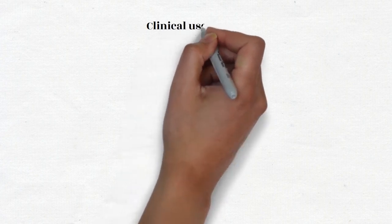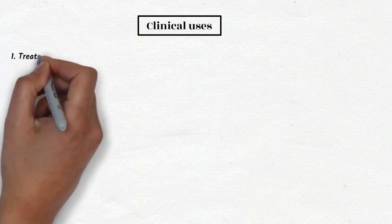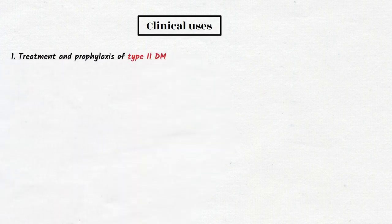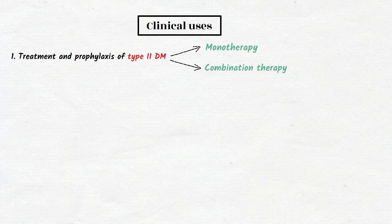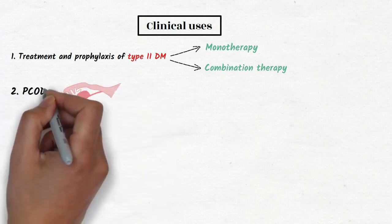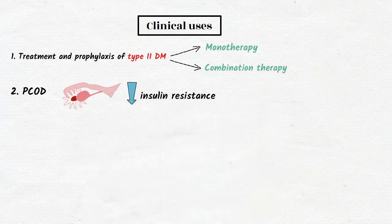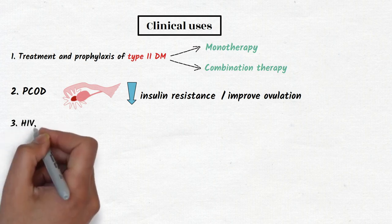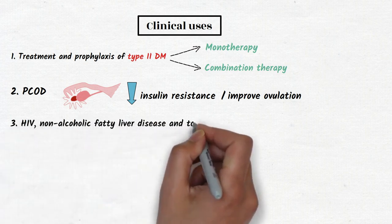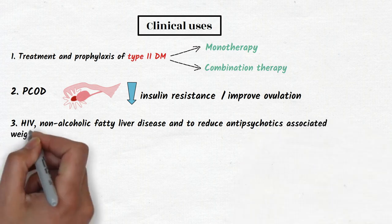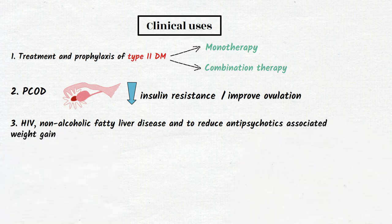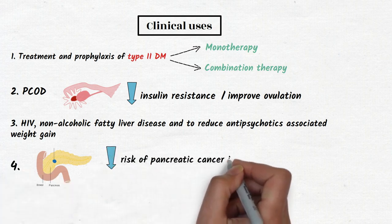Metformin is the drug of choice for treatment and prophylaxis of type 2 diabetes mellitus. It is used as monotherapy or in combination with other oral hypoglycemic agents. Metformin is also used in PCOD to decrease insulin resistance and improve ovulation. It is also used in metabolic syndrome, in HIV, non-alcoholic fatty liver disease, and to reduce antipsychotic-associated weight gain. Metformin use is associated with a decreased risk of pancreatic cancer in diabetes mellitus.